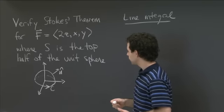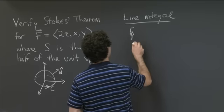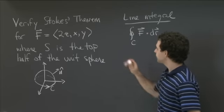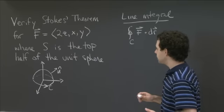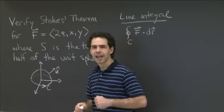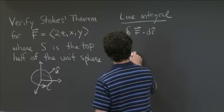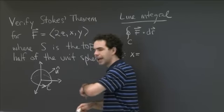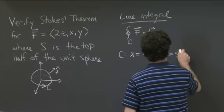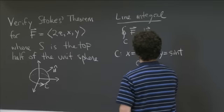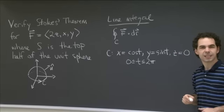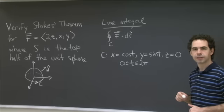To compute the line integral, I need to compute the integral over the curve C of F·dr. I know what F is on that circle, so I need a parametrization. That's a pretty easy circle to parametrize — it's the unit circle in the xy-plane. For C, going counterclockwise, we have x = cos t, y = sin t, z = 0, where t goes from 0 to 2π.